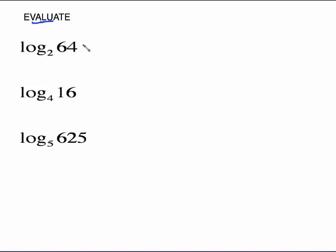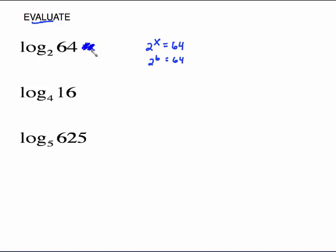Before you convert to exponential form, you need to put equals x so that you have both sides to write your exponential form. From the last video, you know this should be 2 to the x equals 64. You may know off the top of your head what power goes on 2 to make 64. Turns out that 2 to the 6th equals 64, so x is 6, meaning log base 2 of 64 equals 6.